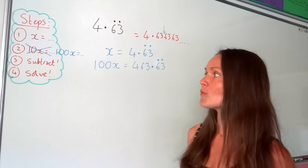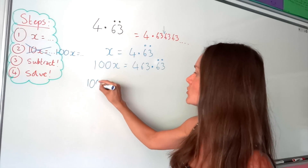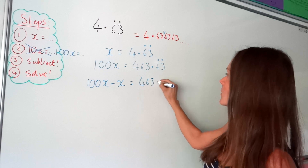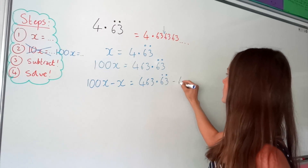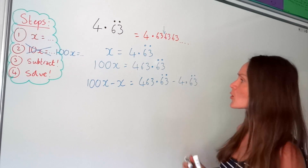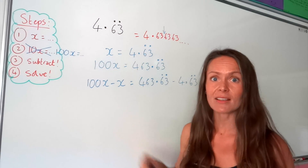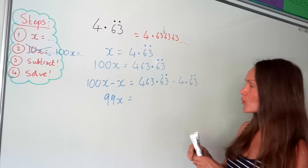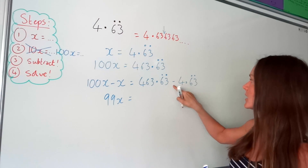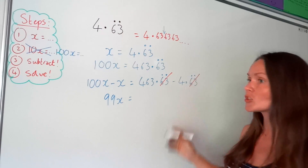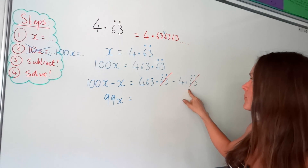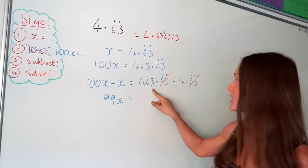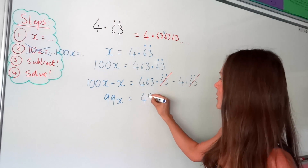Step number 3, just like before, we have to subtract. We're doing 100x minus 1x — the bigger number minus our original value. So 100x minus 1x is 99x. On the right-hand side, I've got 0.63 recurring minus 0.63 recurring, so we've managed to get rid of our recurring decimal. Then we subtract the whole number parts: 463 take away 4 is 459. So 99x equals 459.